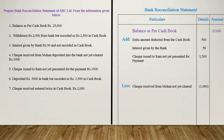The sixth entry is: deposited Rs. 5000 in bank, but recorded as Rs. 3500 in Cash Book. ABC Limited deposited Rs. 5000 in the bank but wrongly recorded it as Rs. 3500, resulting in a difference between the balances of both books. Therefore, to balance both books, we have to add Rs. 1500 in the Cash Book. Therefore, add less amount recorded in Cash Book: Rs. 1500.